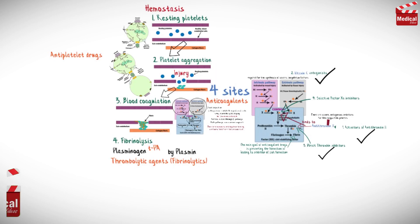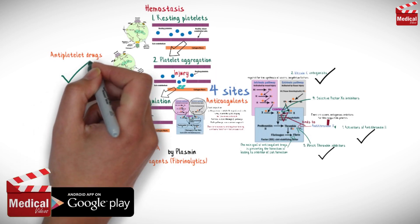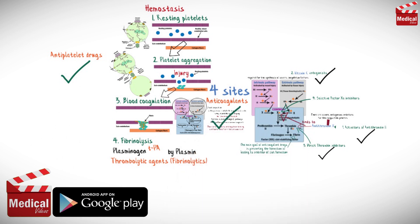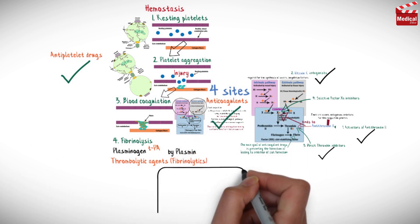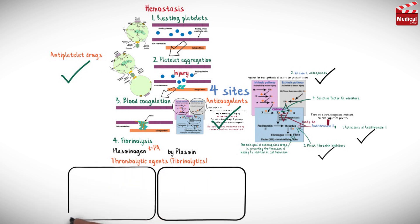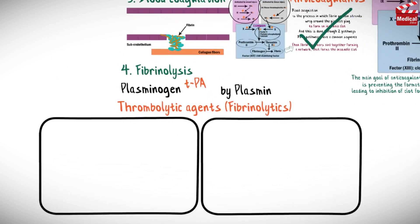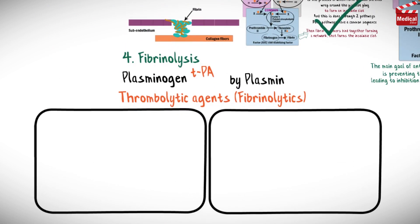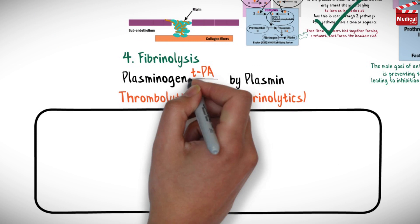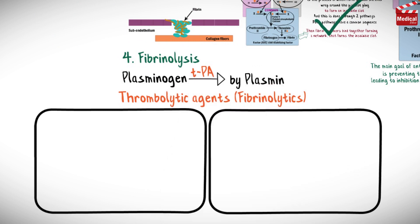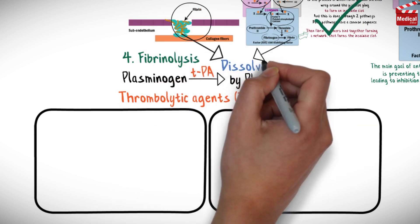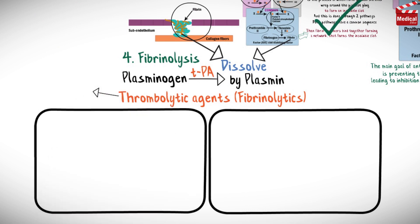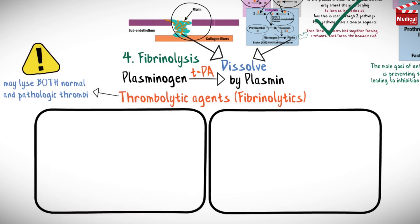In the previous lectures we finished talking about the antiplatelet and anticoagulant drugs. So in this lecture we're going to talk about the thrombolytic drugs. This category of drugs acts by converting plasminogen to plasmin, which simply degrades and dissolves fibrin clots. Fibrinolytic drugs lyse both normal and pathologic thrombi.